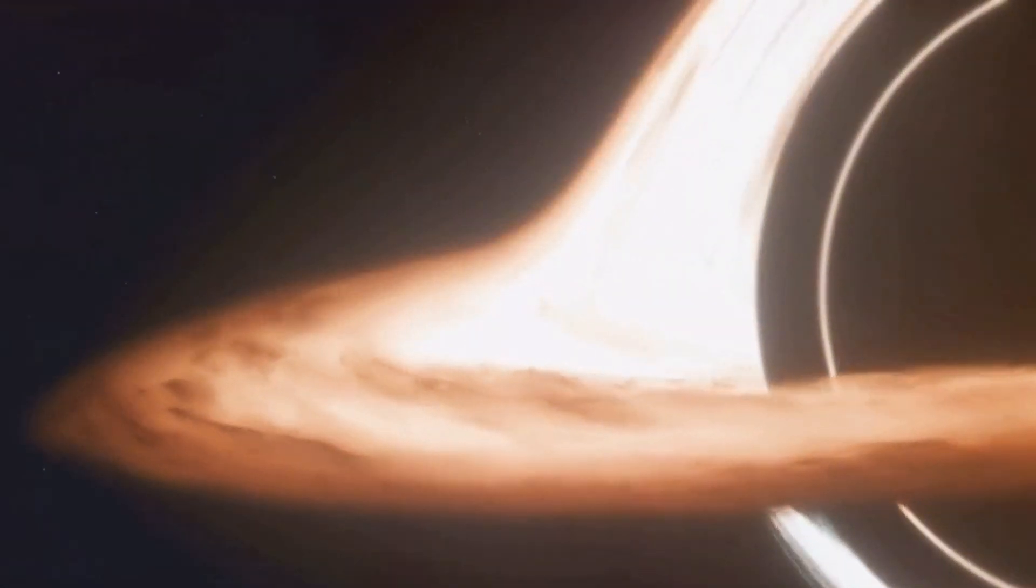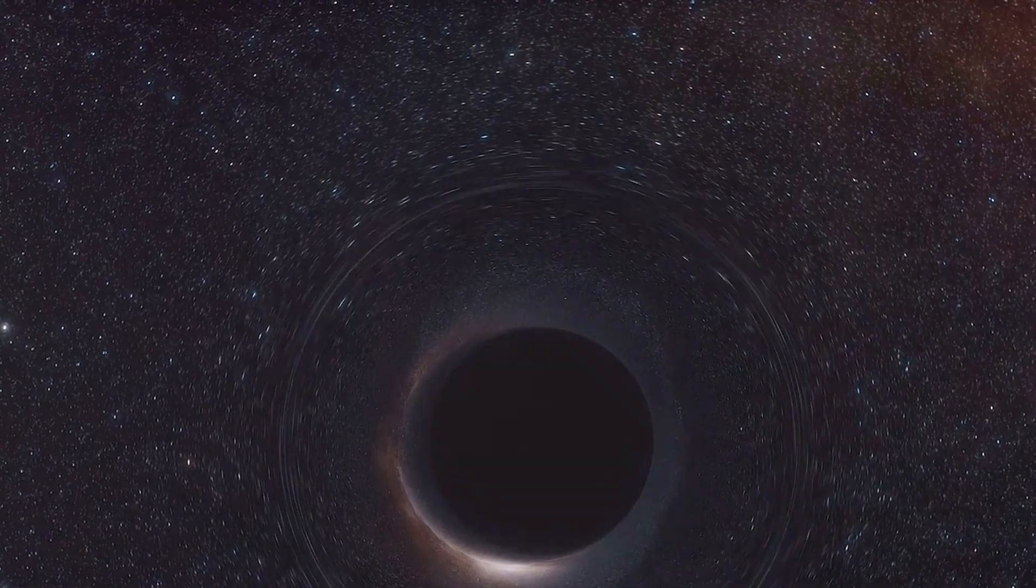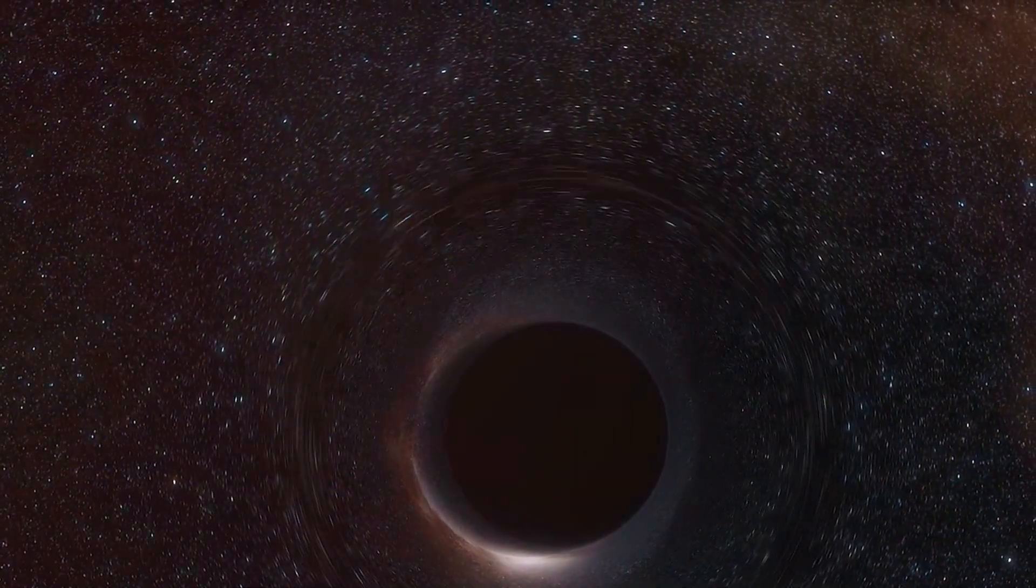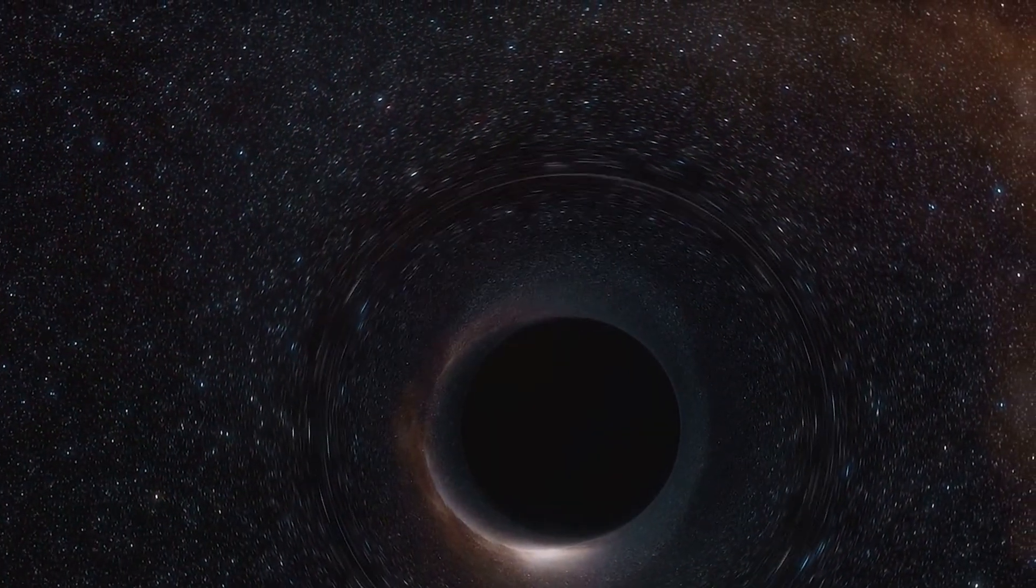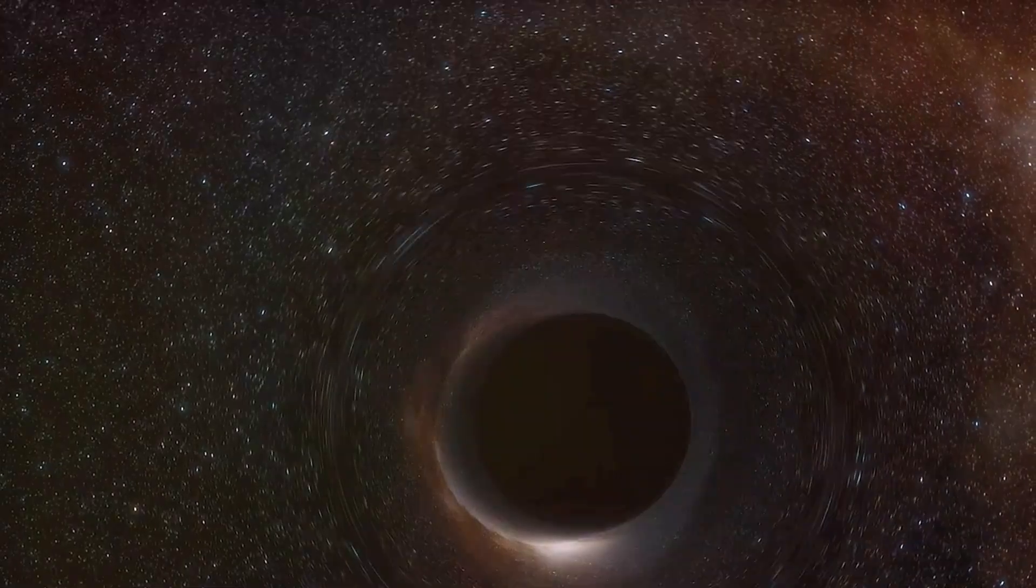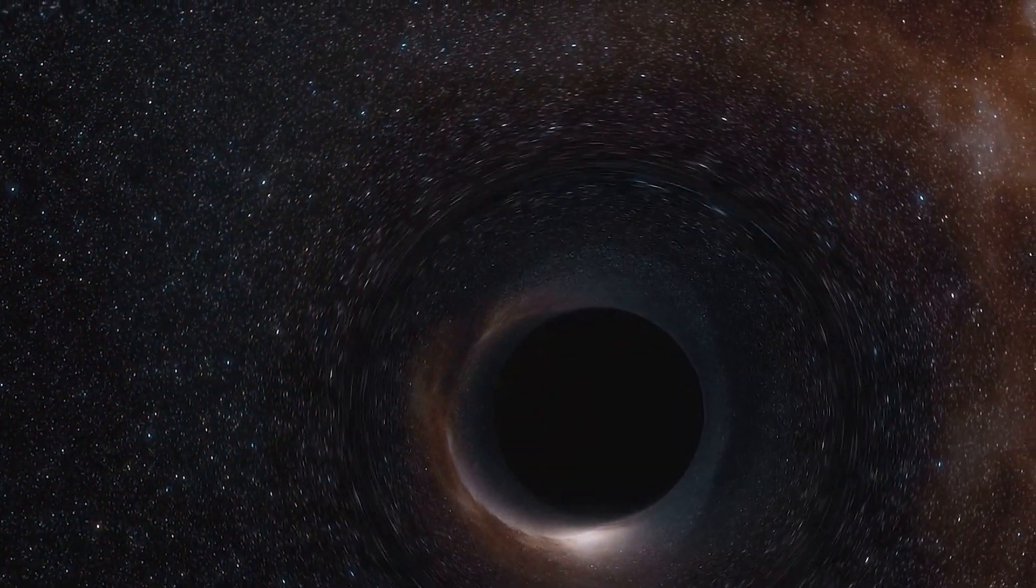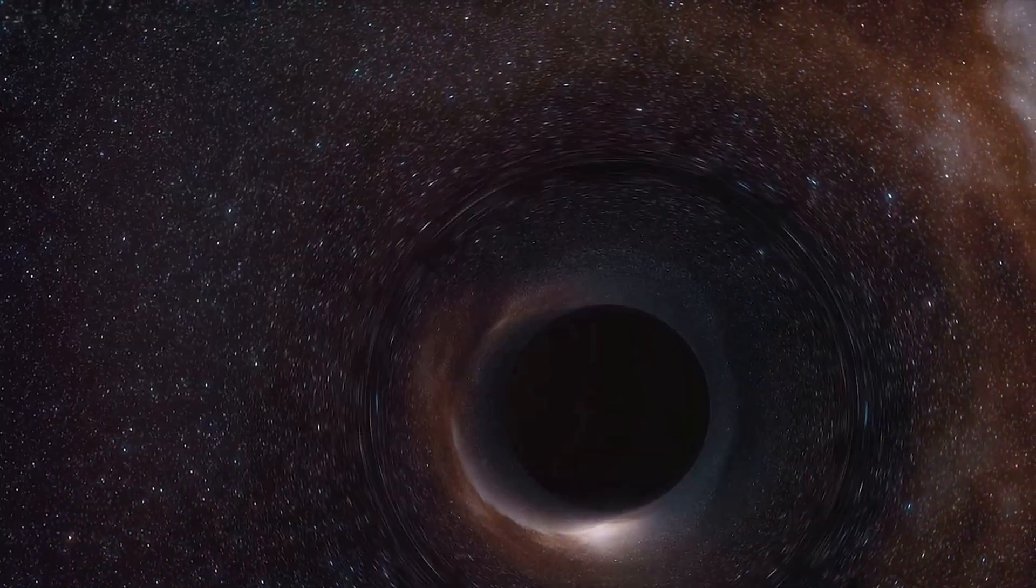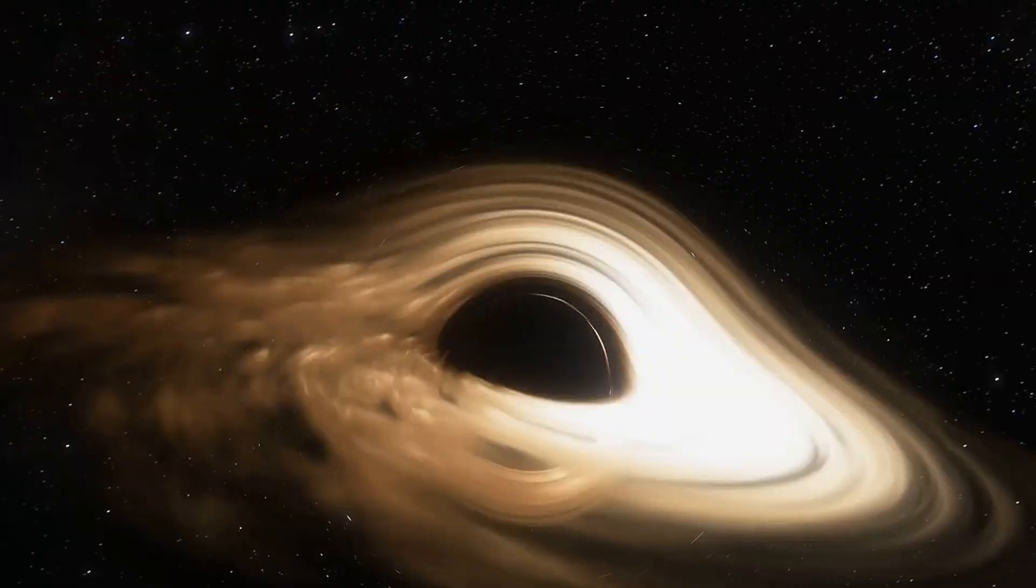Surrounding the singularity is the event horizon, a boundary in space-time beyond which events cannot affect an outside observer. In layman's terms, it's the point of no return. Anything that crosses the event horizon, be it a wandering star, a beam of light or a rogue spaceship, is swallowed forever.